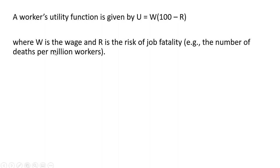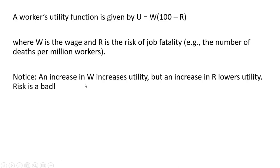Imagine a worker's utility function is given by U = W(100 - R), where W is the wage and R is the risk of job fatality. You'll notice an increase in W increases utility, but an increase in R lowers utility. So we can think of R as a bad.